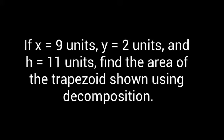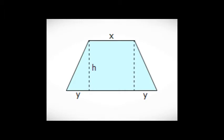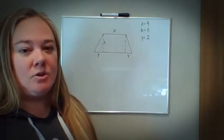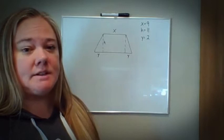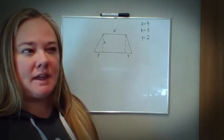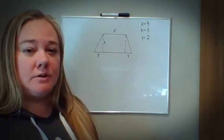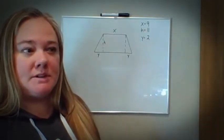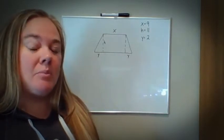If x equals 9 units, y equals 2 units, and h equals 11 units, find the area of the trapezoid shown using decomposition. When you're looking at a trapezoid, there is an algorithm you can use, but I want to focus on how to decompose — deconstruct or break apart — the trapezoid into multiple shapes that you'll be able to find the area of easily.